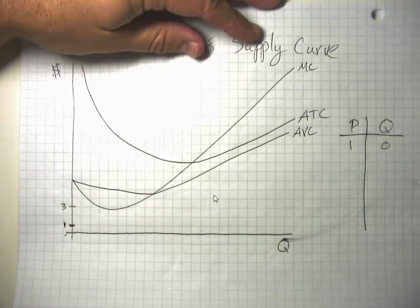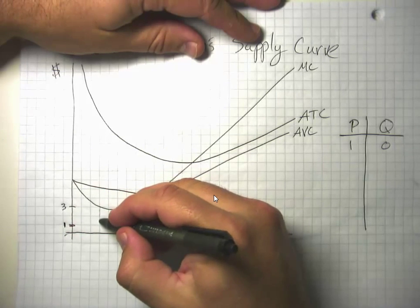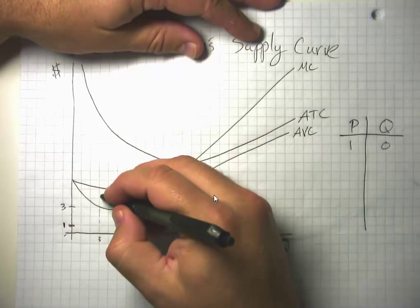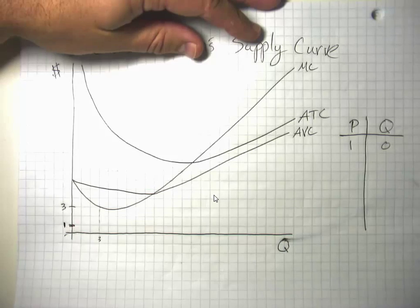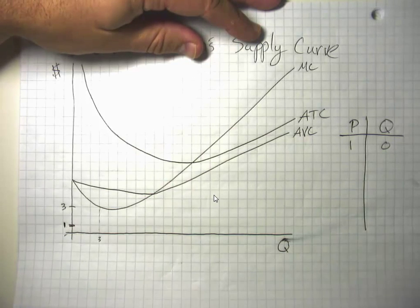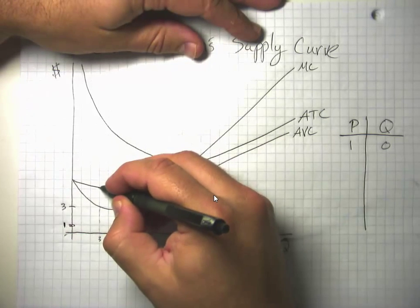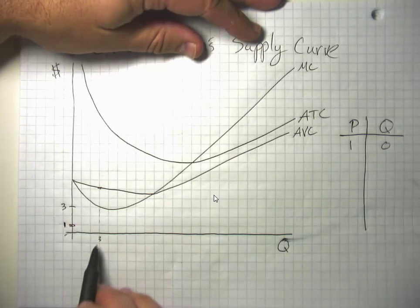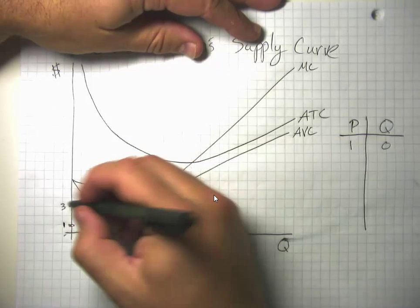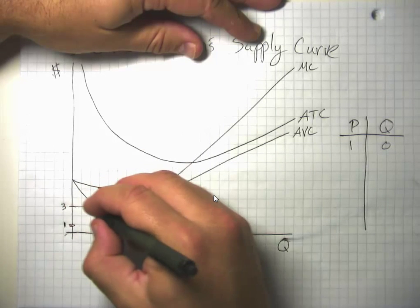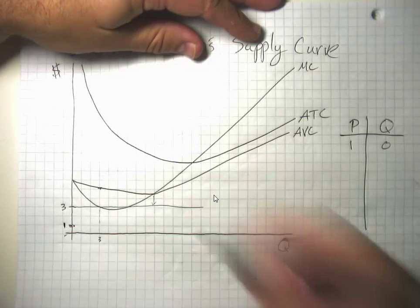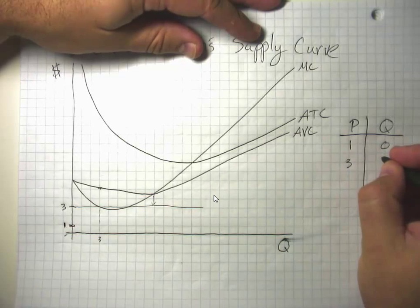What about at a price like three? You might be tempted to think this firm would produce three units, but remember that it can't produce three units without also producing one and two units. Those first and second units had relatively high marginal cost, higher than the third unit. The place to look is to see if it can make a profit at all by producing three. The answer is no, because three dollars is below the minimum of the average variable cost curve. Even at a price of three, it's going to produce zero.